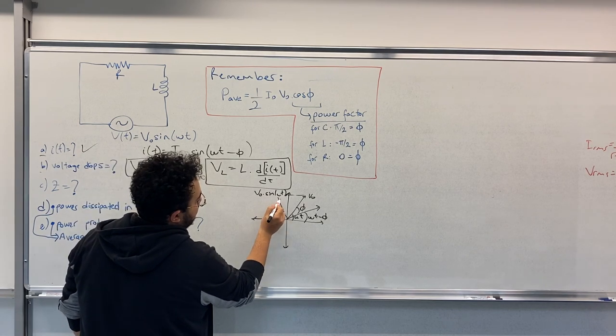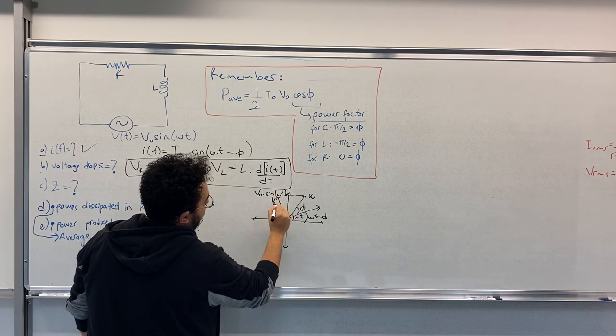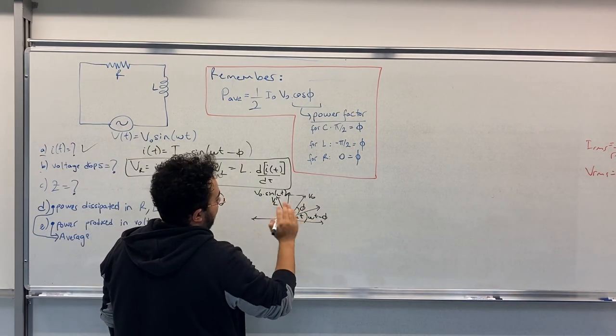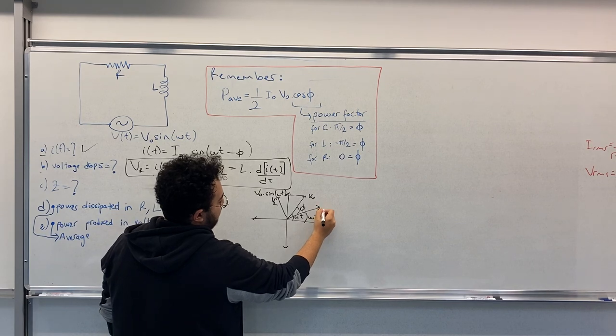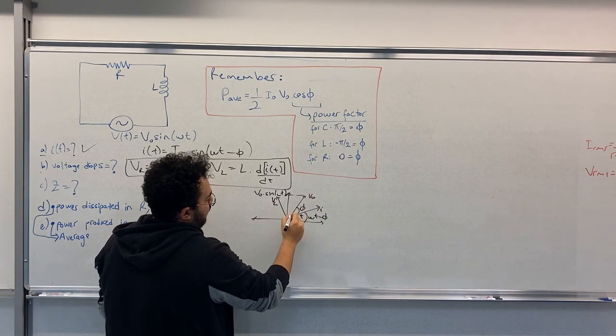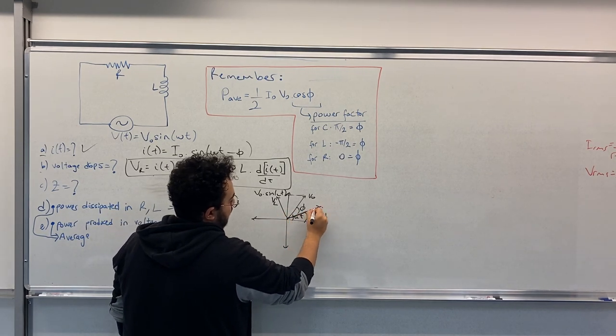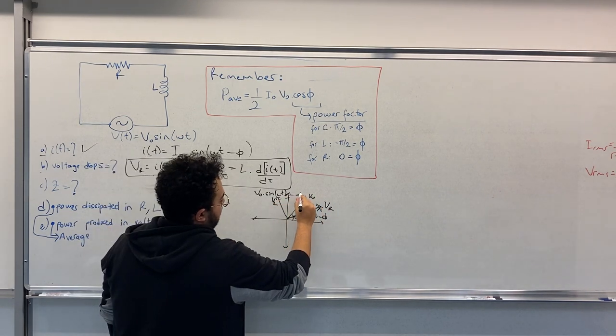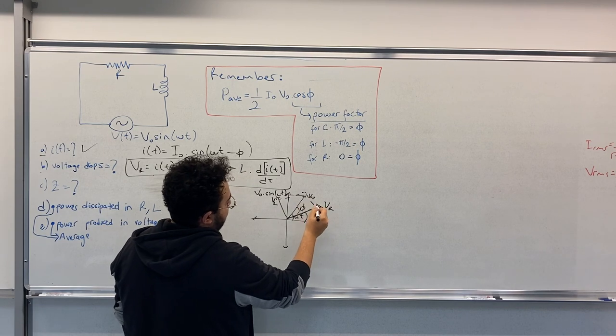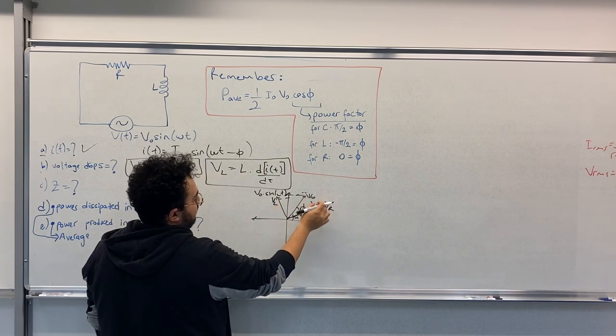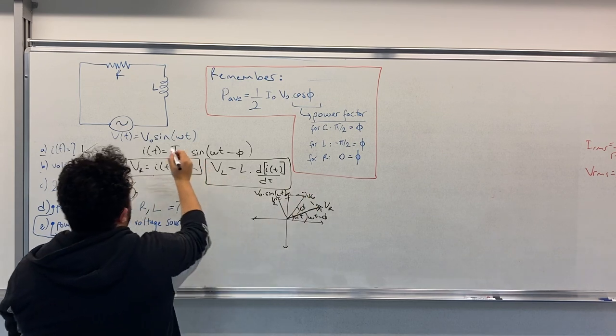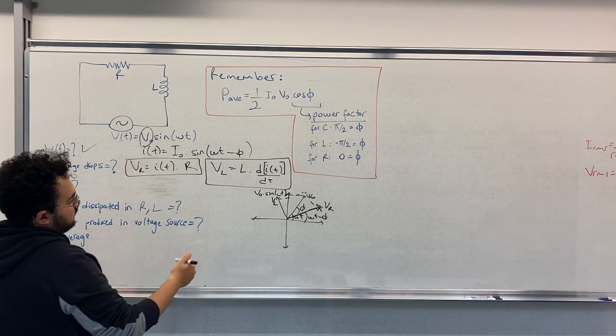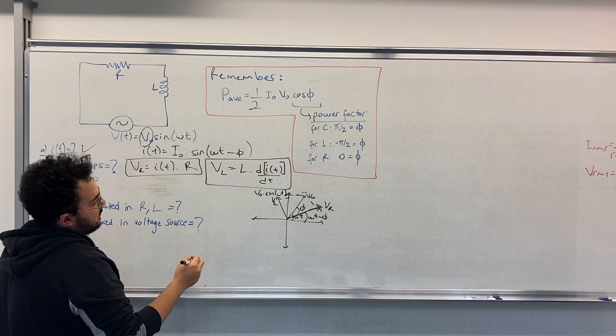And for the resistance, there is no phase between I and VR. So if this is I, VR is on the I. And sum of VL and VR gives you V0. This is V0.